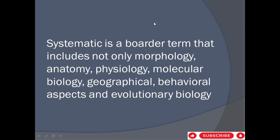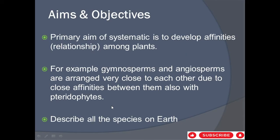Systematics is a broader term that includes not only morphology but also anatomy, physiology, molecular biology, geographical, behavioral aspects, and evolutionary biology.